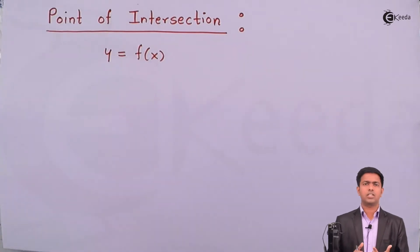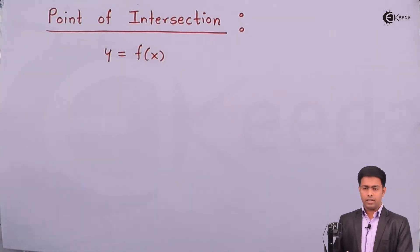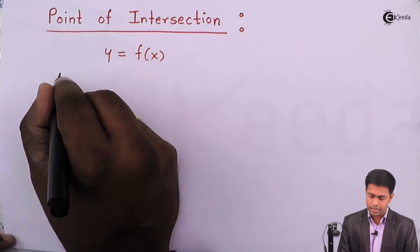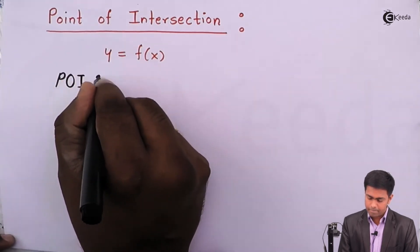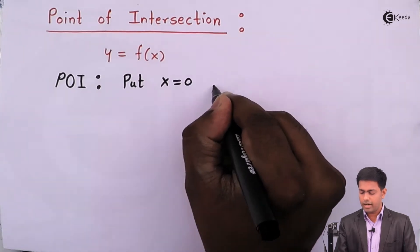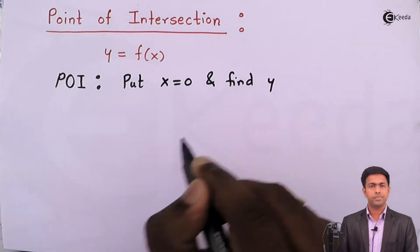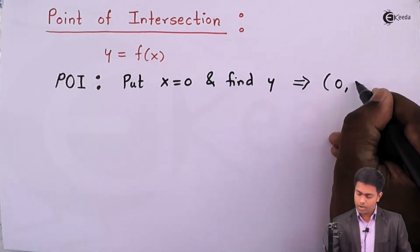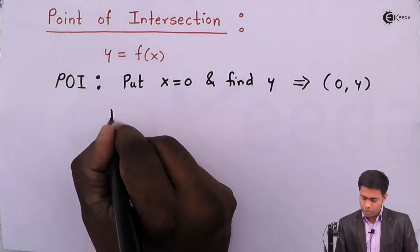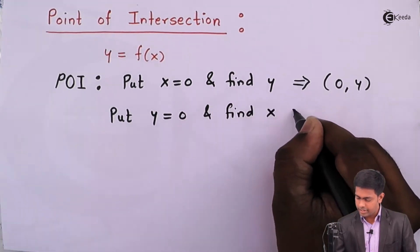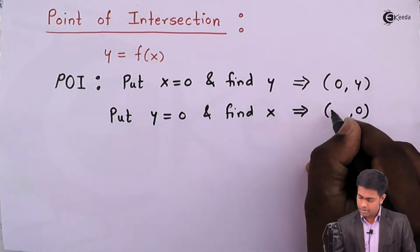It is possible that we'll get only one point of intersection, or we might get two, or we might get four. Let me write this down. For Point of Intersection (POI): first, put x equal to 0 and find y — the point will be (0, y). Then put y equal to 0 and find x — the point will be (x, 0).